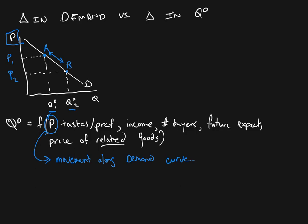Now there are other things: tastes and preferences, income, the number of buyers, future expectations, and the price of related goods — complements and substitutes. These also affect how much buyers want to buy of a given good or service. But because we're in two-dimensional space with price on the vertical axis and quantity on the horizontal, these other factors are not price, so they're going to cause the entire demand curve to shift rather than movement along the curve.